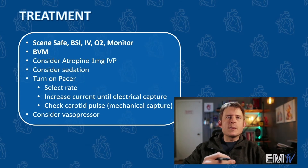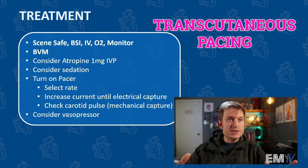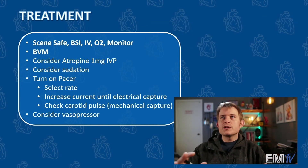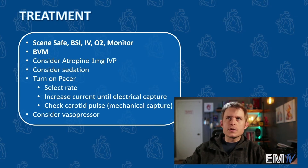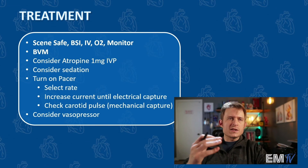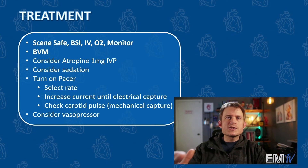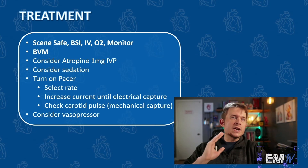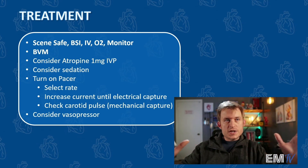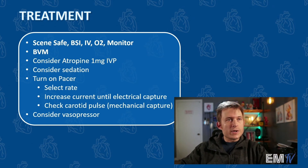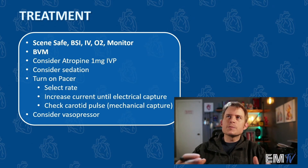Because this is a bradycardic rhythm, I'm going to choose transcutaneous pacing. For any electrical therapy administered to a patient who's alive, you should consider sedation, but because they're unresponsive, we can consider sedation already in place. I'm going to turn on the pacer, select my rate anywhere between 60 and 100 pulses per minute, increase my current until I get electrical capture, and then check a mechanical carotid pulse to confirm mechanical capture. Beyond this, if you just say rapid transport, I'll give you full points as an evaluator.